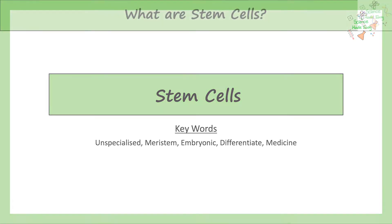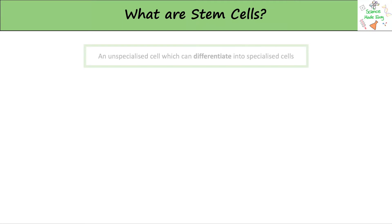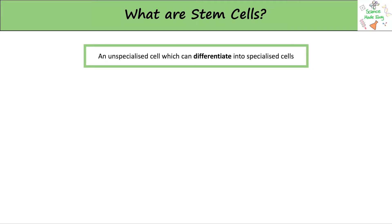Welcome to this video on stem cells. Stem cells are unspecialised cells which can differentiate into specialised cells. This basically means that stem cells can turn into other types of cells in the body to replace them.